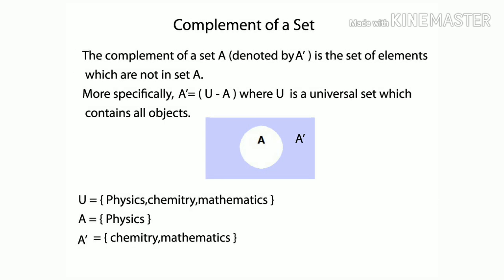Complement of a set. The complement of a set A, denoted by A complement, is the set of elements which are not in set A. More specifically, A complement equal to U minus A, where U is a universal set which contains all objects. Suppose U equal to {physics, chemistry, mathematics}, A equal to {physics}, then A complement equal to {chemistry, mathematics}.